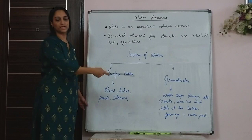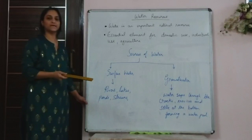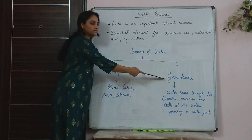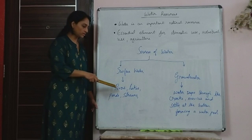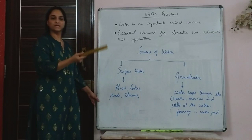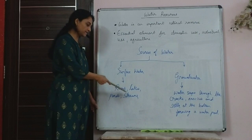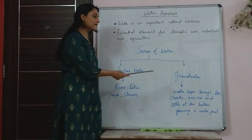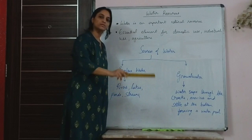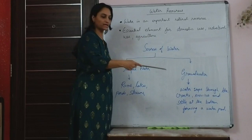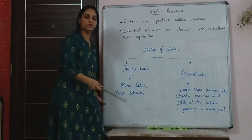The sources of water include rainfall as the primary source. Other than that, we have surface water and groundwater. Surface water — found on the surface of the land — includes rivers, lakes, ponds, and streams. Almost 60% of surface water comes from rivers like the Indus, Ganga, and Brahmaputra. Groundwater means water that seeps through cracks, crevices, and openings underground, settling at the bottom to create a water table, from where it is drawn by digging the soil.